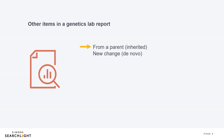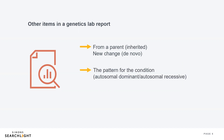De novo means new and the change was not inherited from either parent. The report includes whether the condition is autosomal dominant or autosomal recessive. This tells you how many changes are needed to cause a particular genetic syndrome — one change is autosomal dominant and two changes is autosomal recessive. Other information on a lab report might include the parameters the lab used for the test and the list of genes that are missing or extra because of the copy number variant.